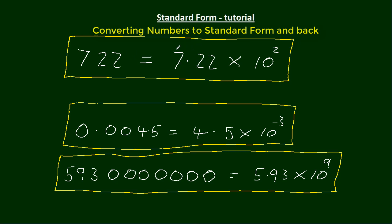The first number is between 1 and 10, and then we times it by 10 to a particular power. It can also be used for very small numbers, but this time it becomes a negative power, and also very large numbers like this.